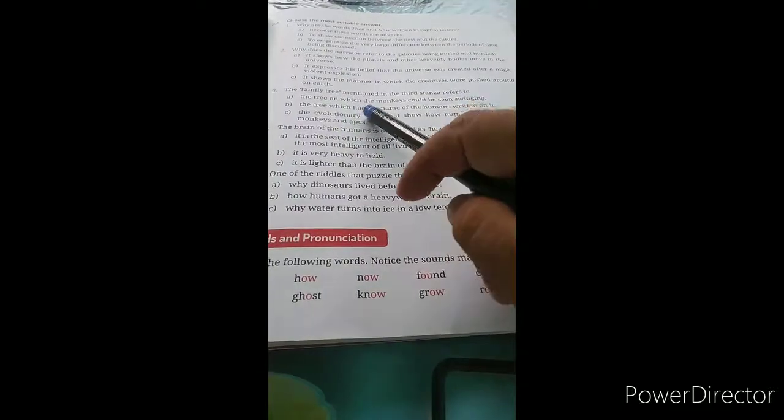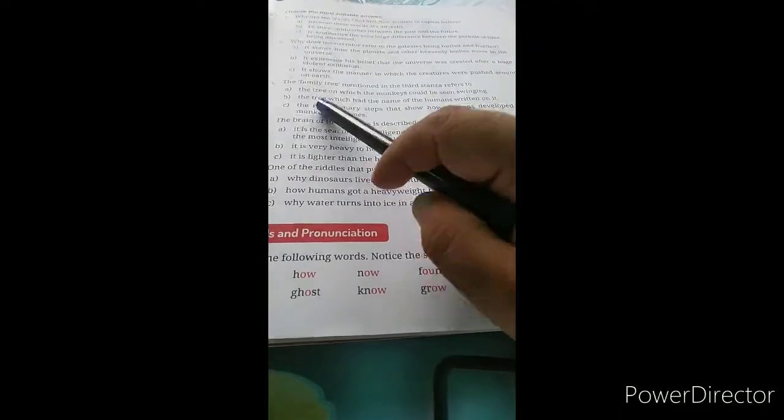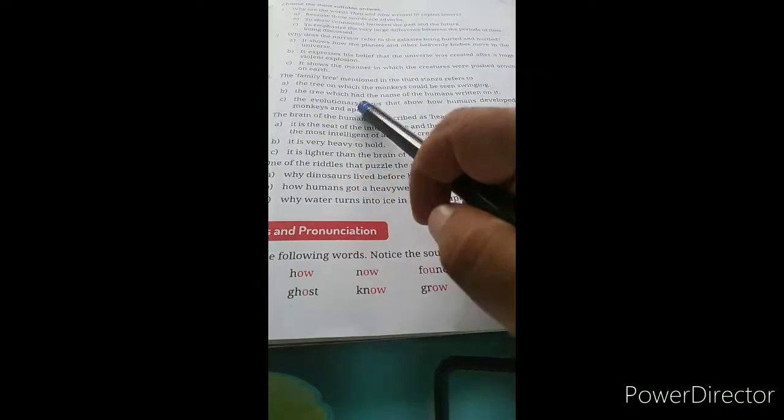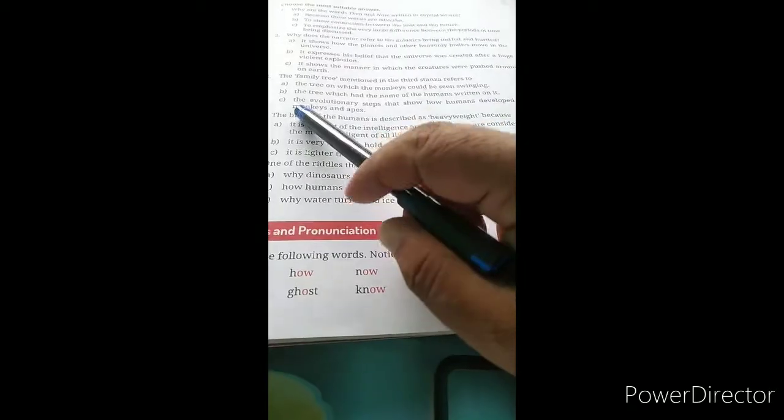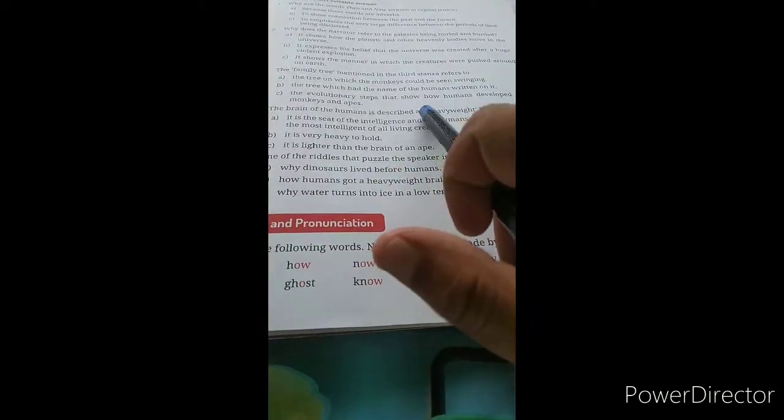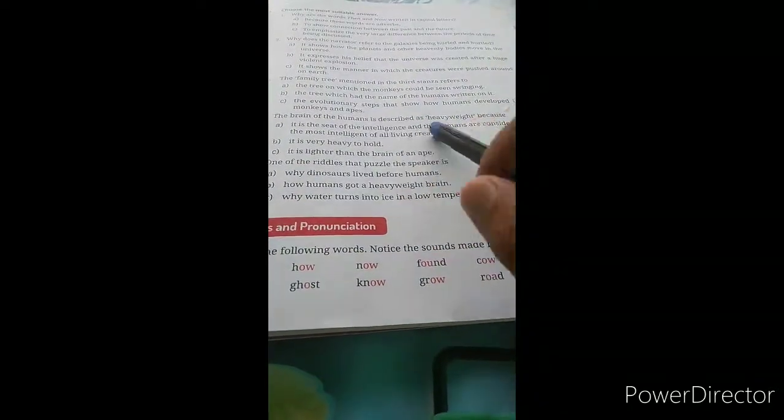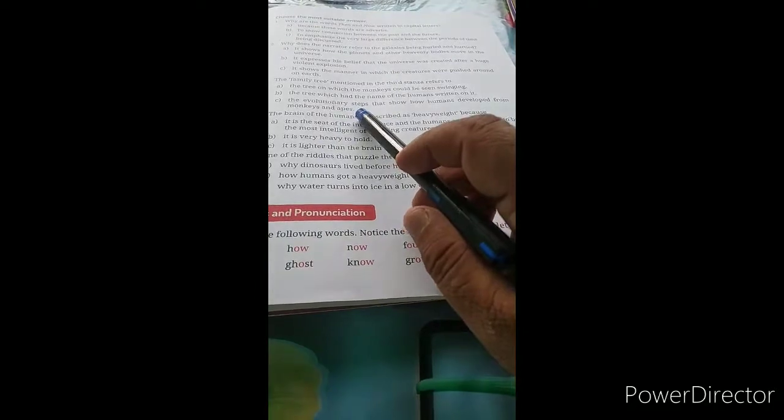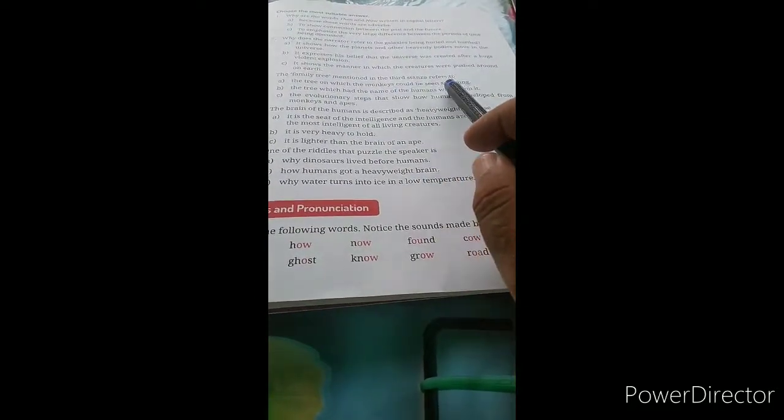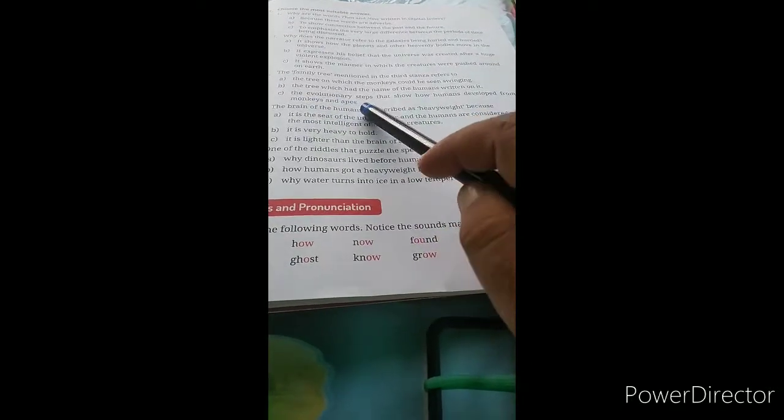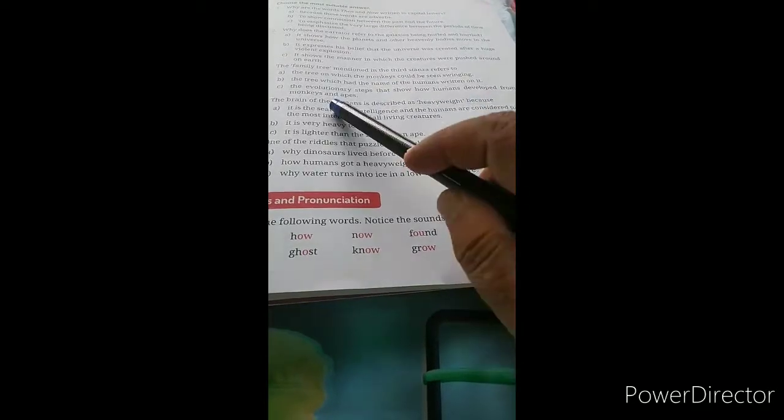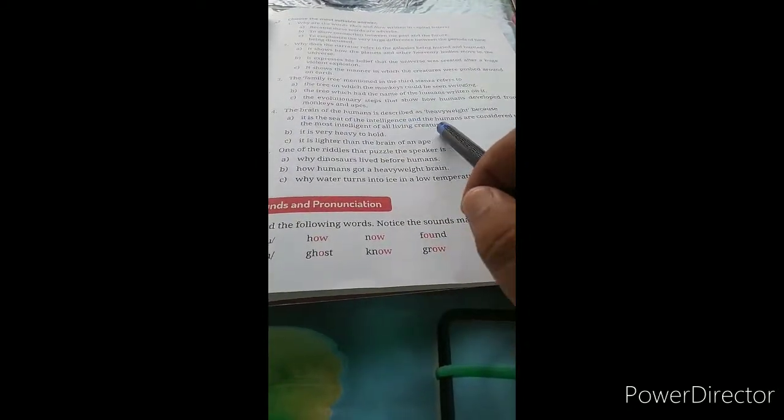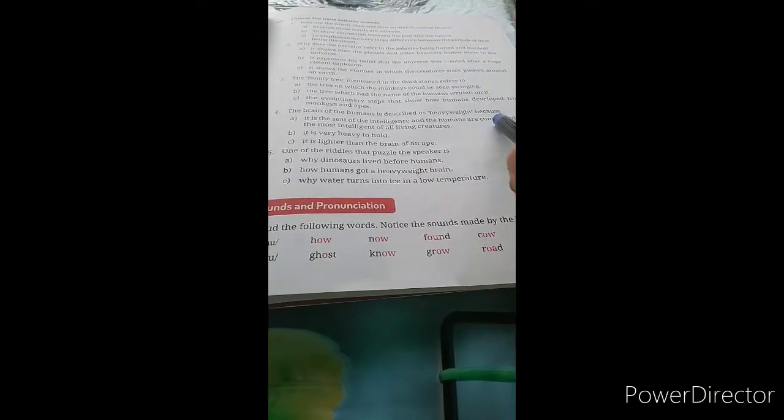Question three: The family tree mentioned in the third stanza refers to: A - the tree on which the monkeys could be seen swinging, B - the tree which had the name of humans written on it, C - the evolutionary steps that show how humans developed from monkeys and apes.